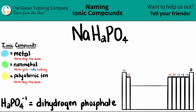Now let's spot out the polyatomic. Keep in mind that polyatomics are never going to be on the periodic table — you have to memorize them. Whenever you see an H2PO4, that always has a negative one charge. You should memorize your charges as well.